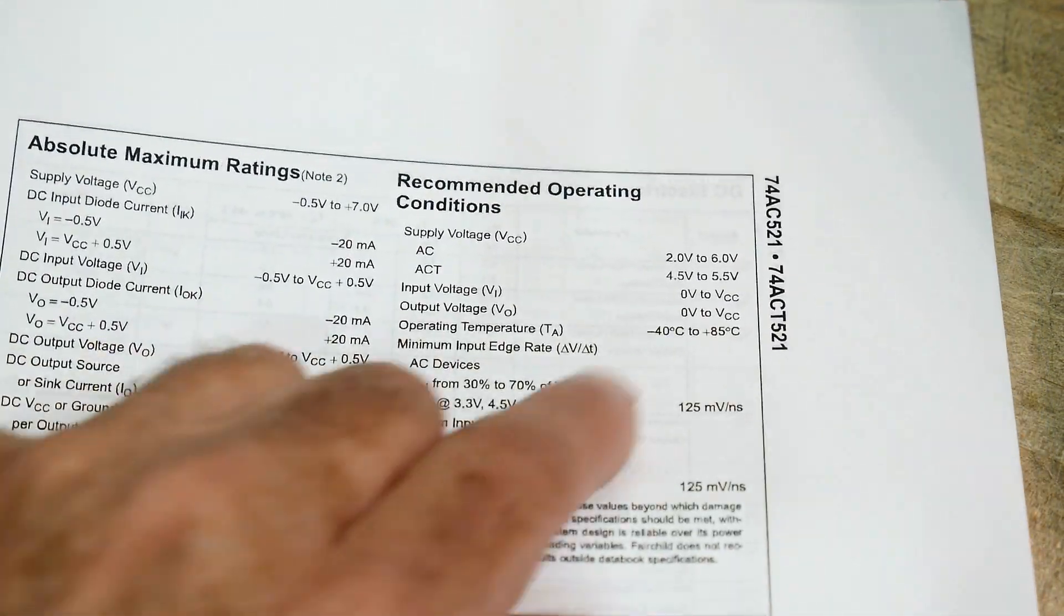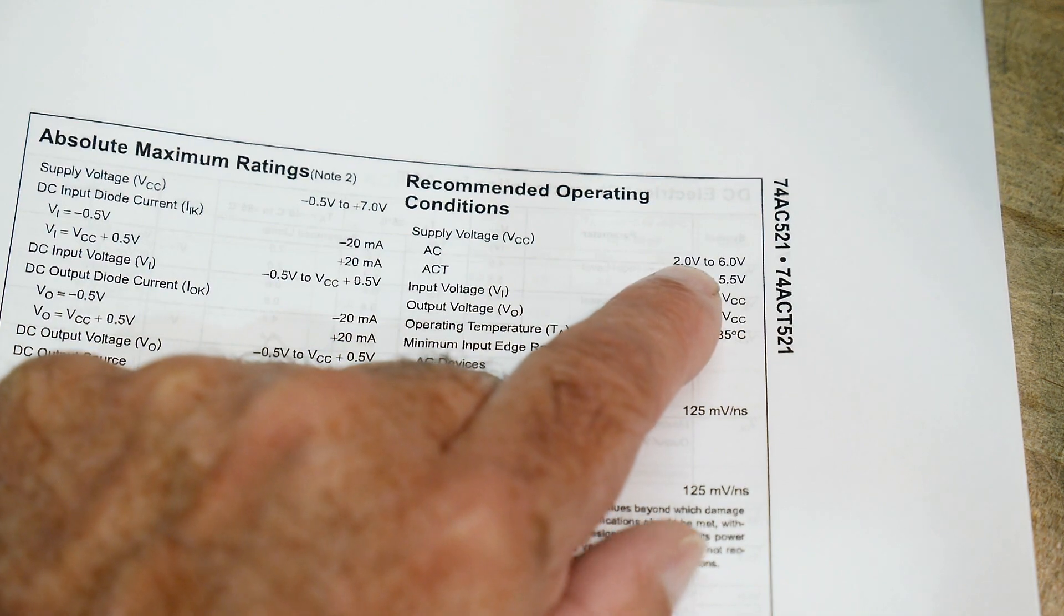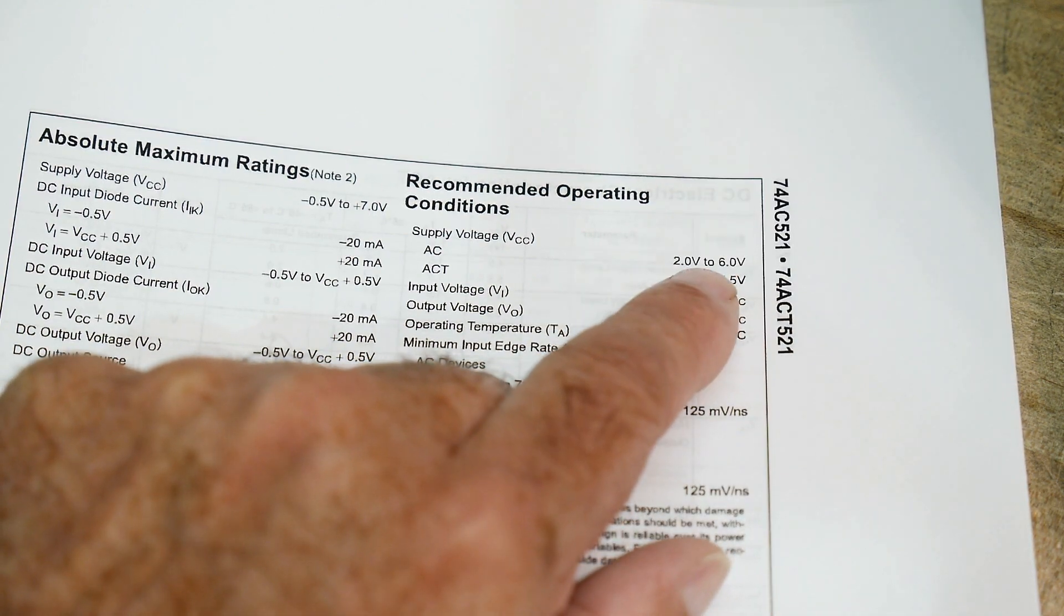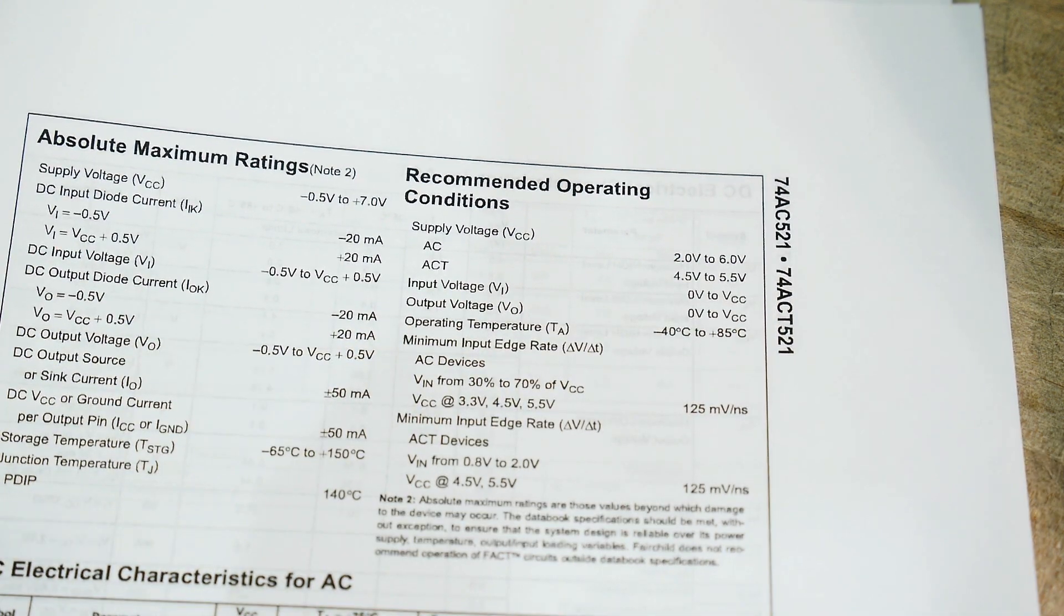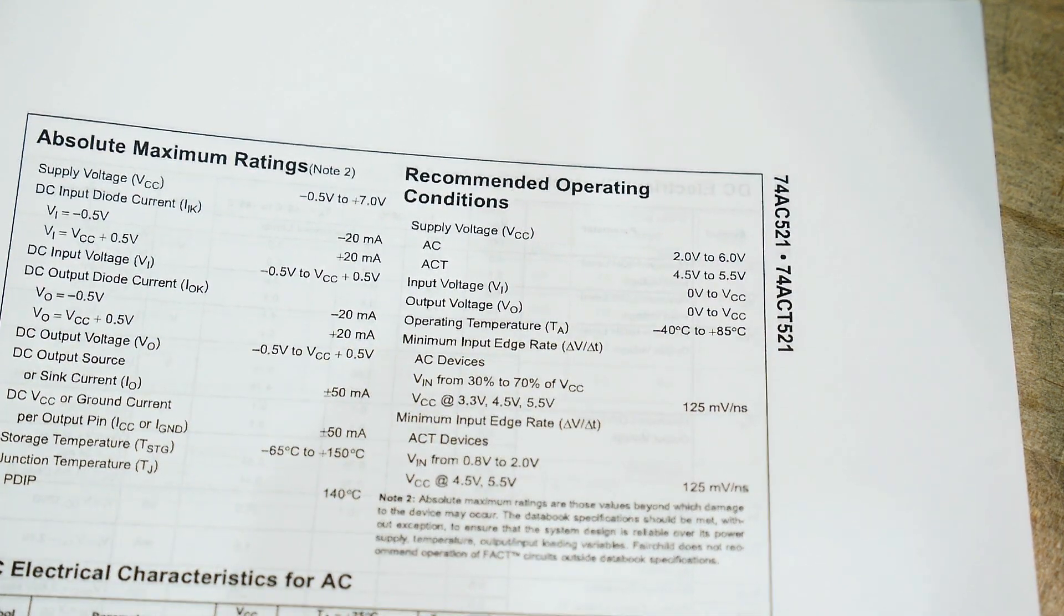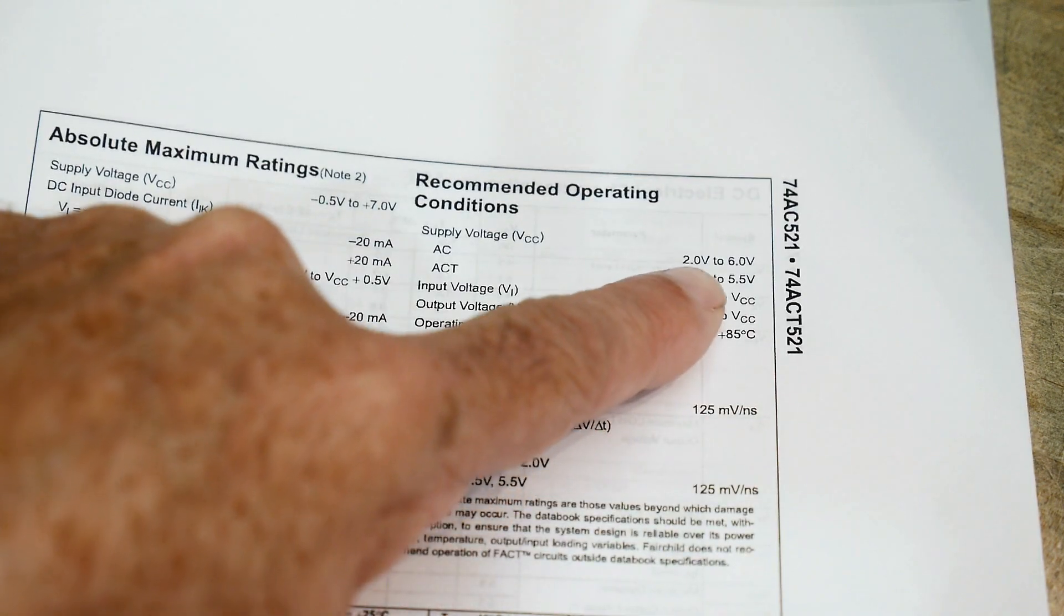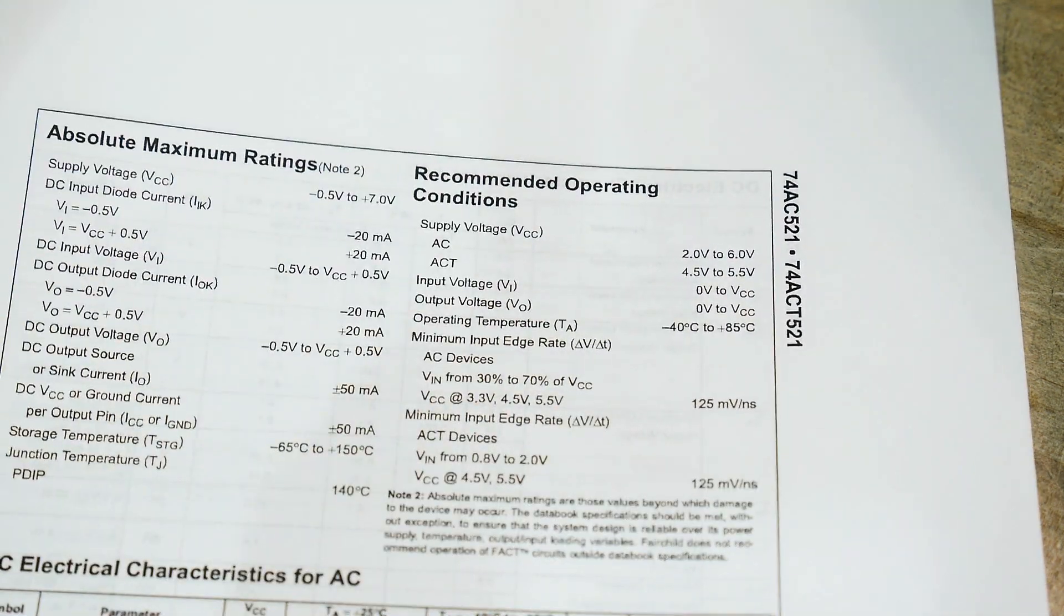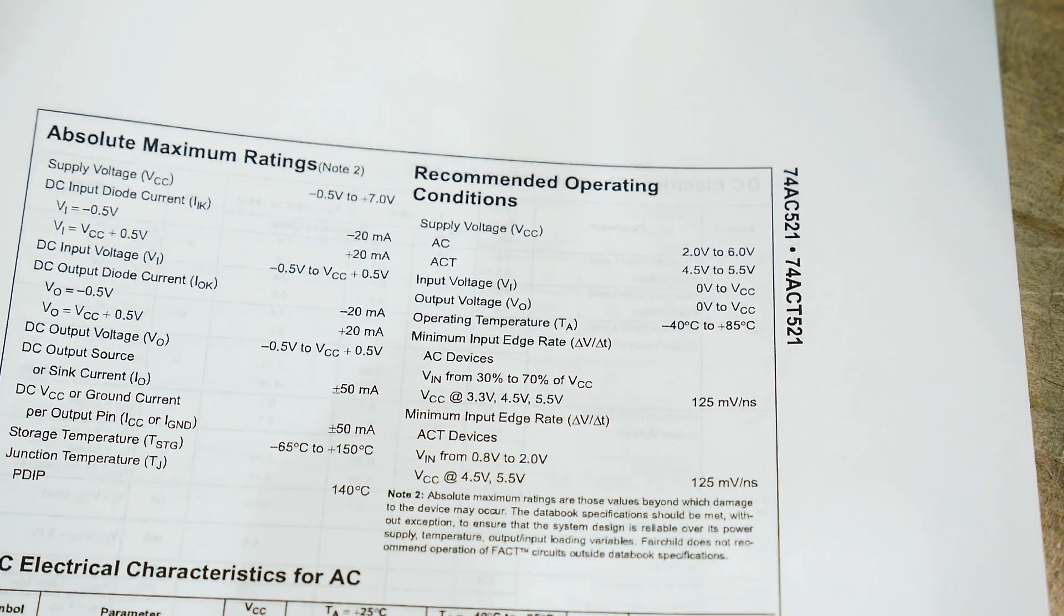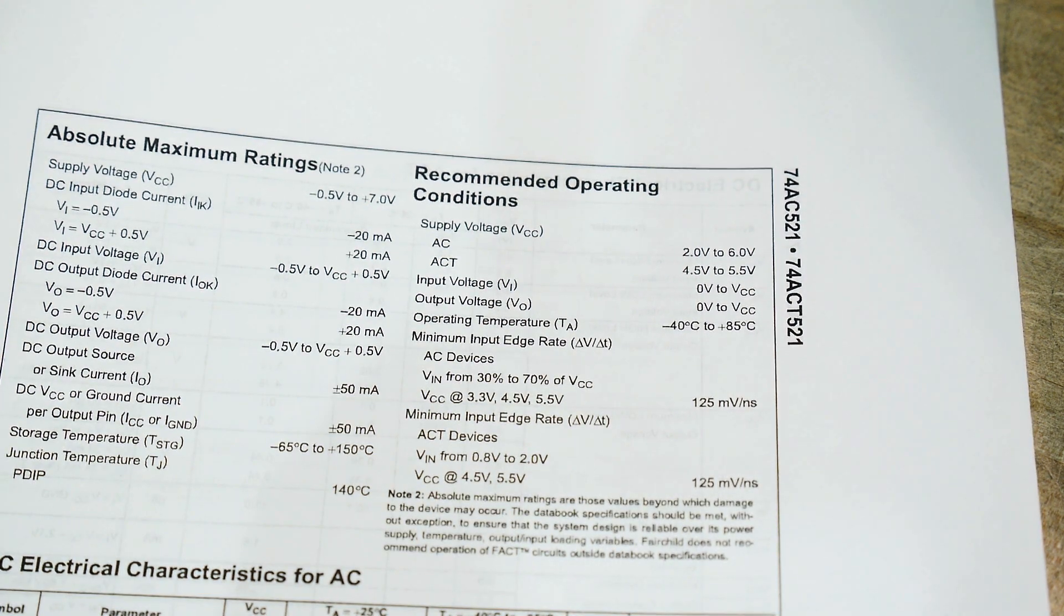So it is a CMOS part and they can operate from two volts to six volts. Wow, that's really low, I didn't know that. Yeah, six volts to two volts. So if you have two volt logic you need this, or a lot of things operate at 3.3 now, this would be just fine.